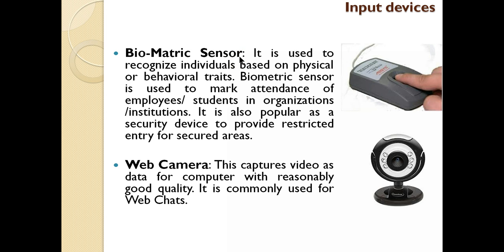Next is the biometric sensor. Nowadays we all must have seen this type of device — somewhere in the bank, at doors or gates of organizations, factories, or schools and colleges. It's a biometric device that recognizes individuals based on physical or behavioral traits. Every human being has a different thumb or finger impression. Some machines scan eyes, some scan fingerprints, some scan voice. All of these come under biometric sensors, which are input devices.